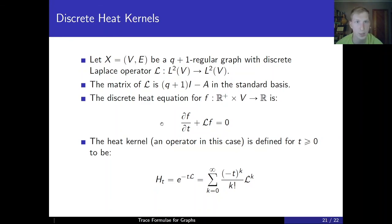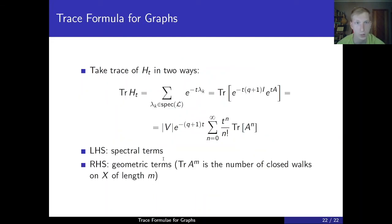We can take the trace of this heat kernel in two ways. First using the eigenbasis, because L can be represented by a real symmetric matrix, it has real eigenvalues and the corresponding eigenbasis, and this trace will just be the sum of these exponentials over the spectrum of L. While we can also use the definition of the heat kernel to compute this trace, and we will find the following infinite sum. And this is a trace formula for graphs, because on the left hand side we have spectral terms, containing information about the spectrum of the Laplacian on the graph, and on the right hand side we have geometric terms, because as Daksh explained, these values, the trace of a to the n, are the number of closed walks of length n on the graph. Thank you very much for your attention.